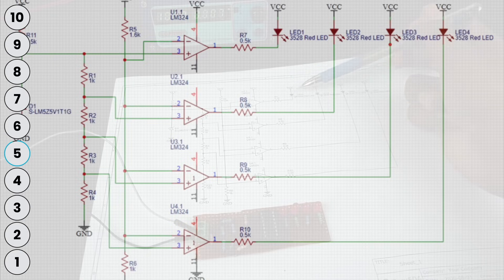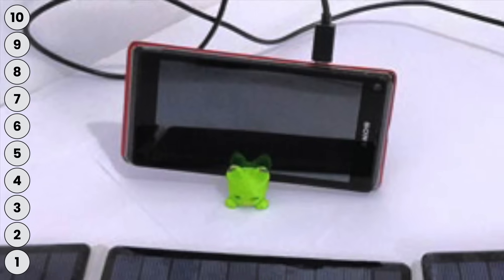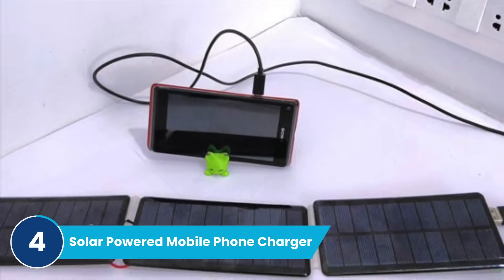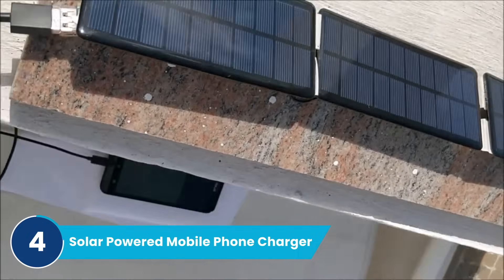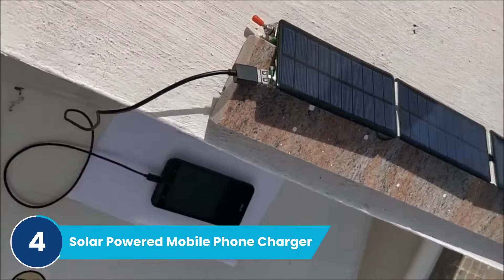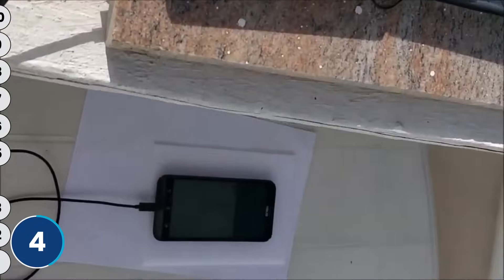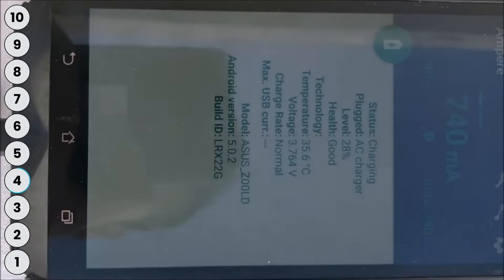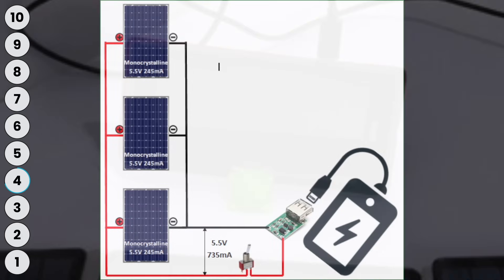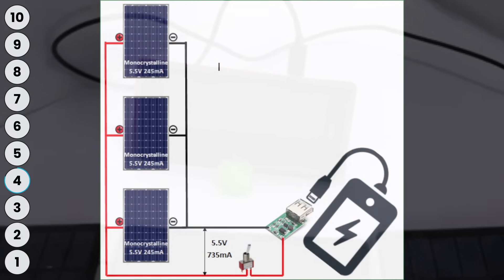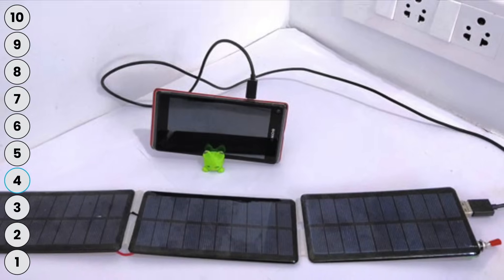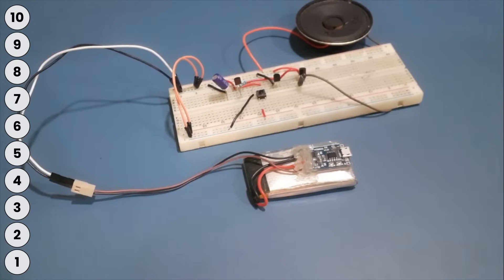Okay, we are halfway through and coming on at number four, we have a solar powered mobile phone charger. So this charger here can charge your phone directly from the sun with up to a charging current of 750 milliamps. Now the best thing is you only need four components: three solar panels and one 5-volt boost module which will provide 5 volts for your phone to get charged.